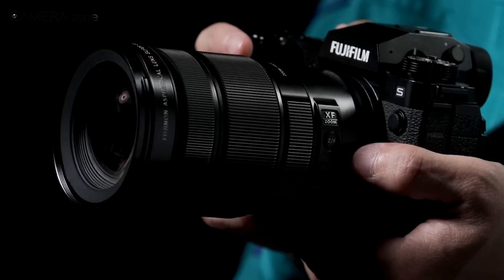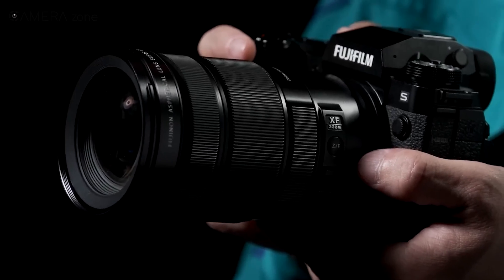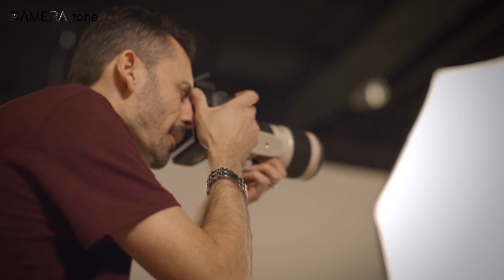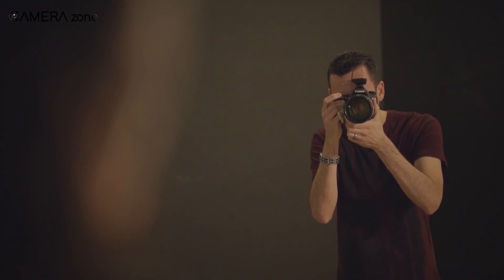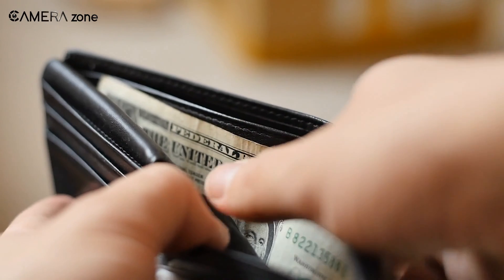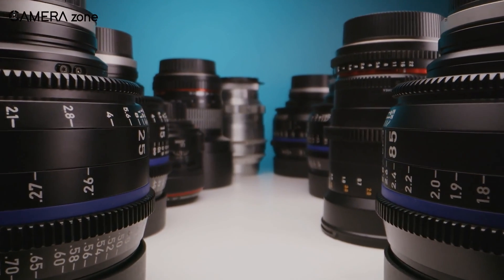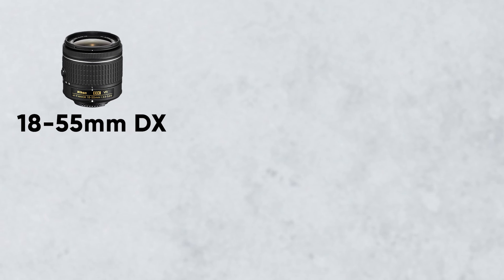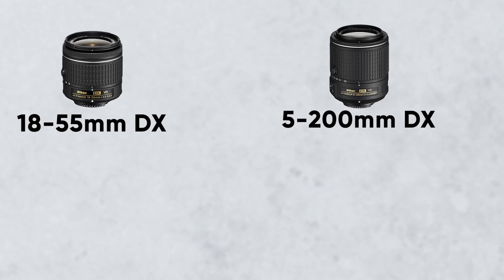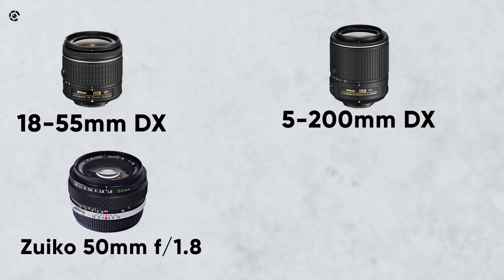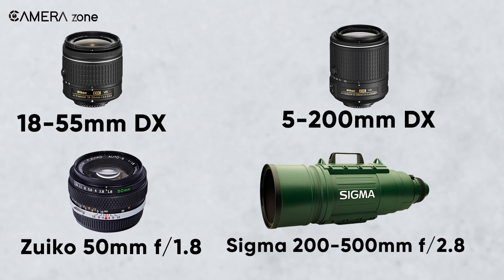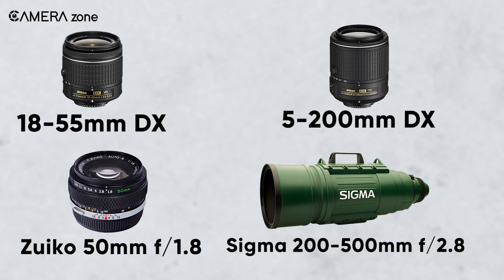Most common prime and zoom lenses you can find are at quite affordable prices. Telephoto lenses tend to cost more than the usual ones. You should highly consider focal range when choosing the right lens for your type of photography. If you're on a limited budget, you can go for some older lenses that are good for most modern cameras — the Nikon 18-55mm DX, 55-200mm DX, Zuiko 50mm f/1.8, and Sigma 200-500mm f/2.8 are some of the cheaper lenses as far as camera equipment goes.